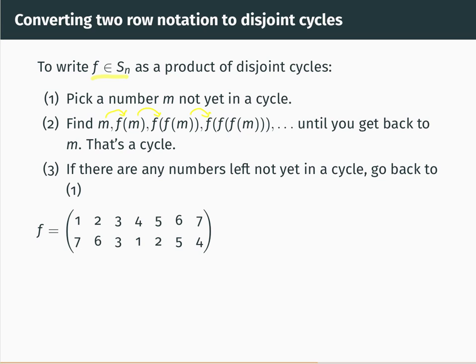We'll pick a number which we haven't yet got in a cycle, we may as well choose one. So one went to seven. What happens to seven? So we apply f again. Seven goes to four. And if we look what happens to four, you can see that four goes back to one again. So there's our first cycle. Let's write it down. One, seven, four.